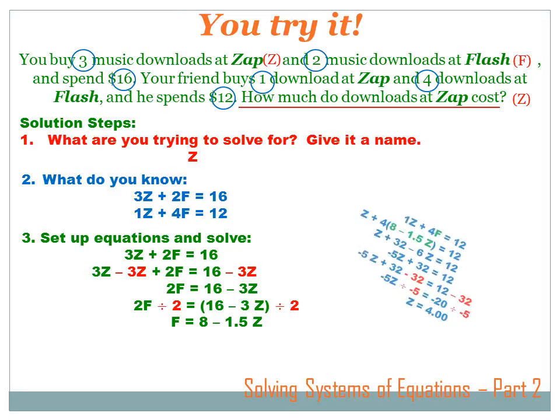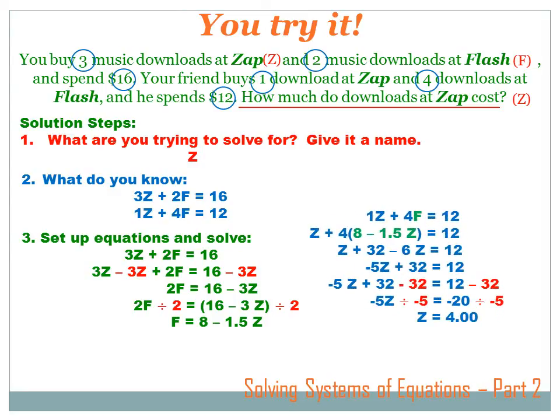If I take the first expression and solve for F, I'll come down to F equals eight minus one and a half Z. Now I know what F equals, so I can substitute for F in the second expression. I'll replace it with eight minus one and a half Z. Now I've got an expression that reads Z plus four times the expression eight minus one and a half Z equals twelve. You can pause and watch my step-by-step solution, but for the sake of saving some time, let's just cut to the chase: Z equals four dollars.